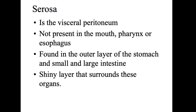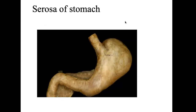The outermost layer is the serosa, also called the visceral peritoneum. It's not present in the mouth, pharynx, or esophagus, but it's found in the outer layer of the stomach and the small and large intestine. It's the very shiny layer that you would see surrounding these organs and sort of closing them in.